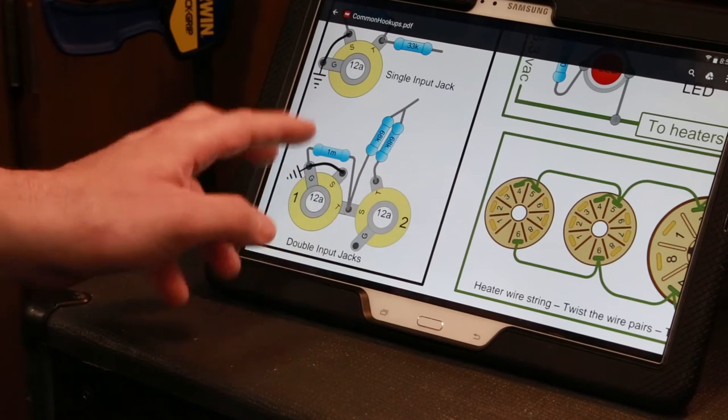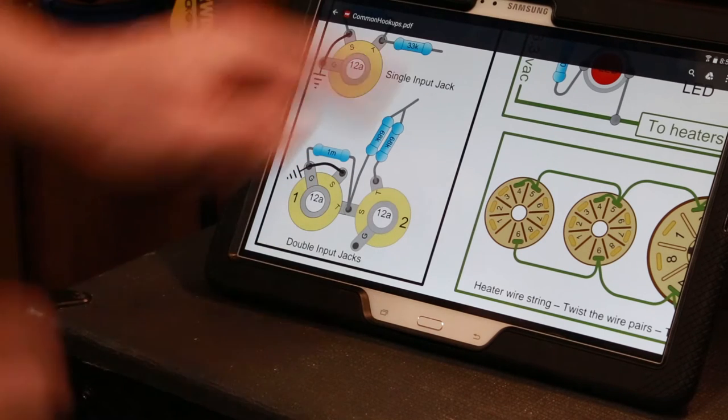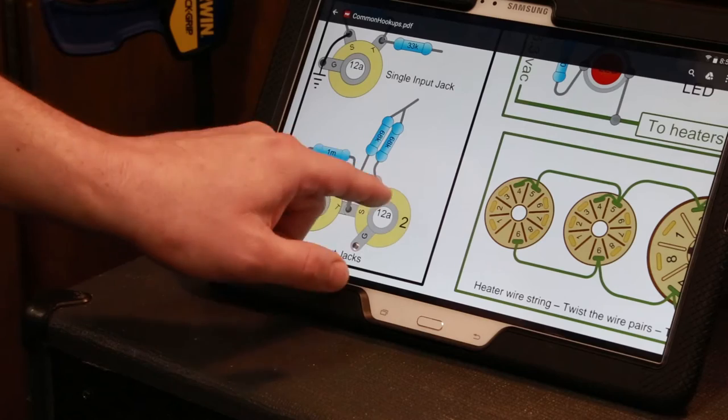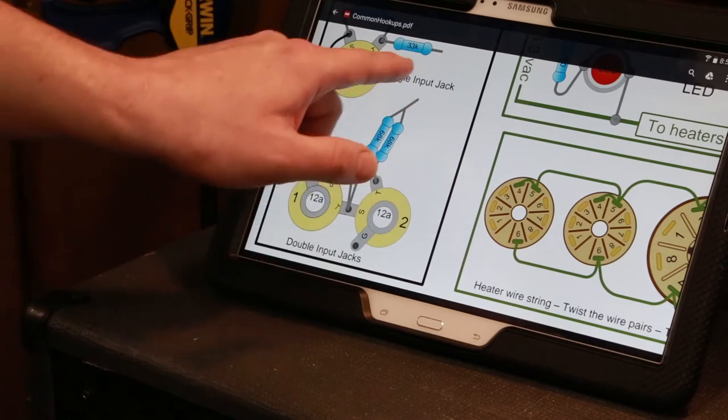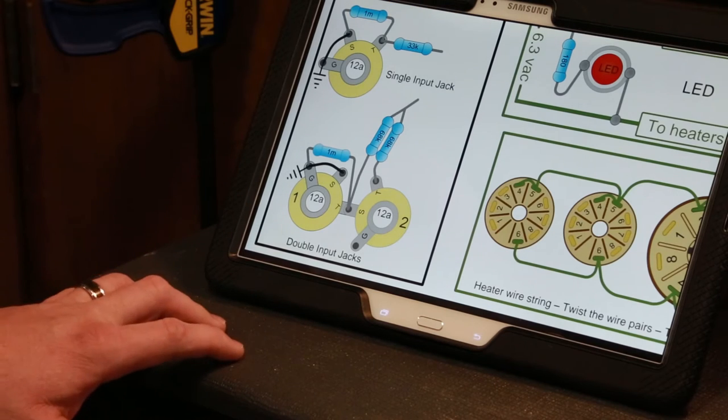If you connect into this second one, you have 1MG to ground and you also have 68K that goes this way. But when you connect into this one, you have a 68K that goes out, but you also send it through another 68K as well as the 1MG to ground. So it actually changes the tonality.